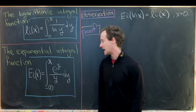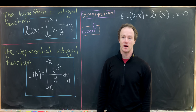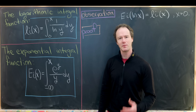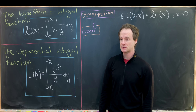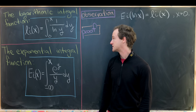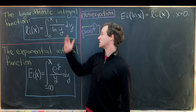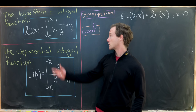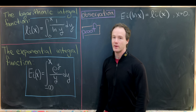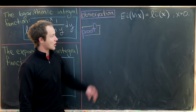Next we have the exponential integral function, denoted Ei(x), defined as the integral from minus infinity to x of e^y over y dy. So why do we need to define these functions? The integrands here do not have elementary antiderivatives — there's no simplification possible. We cannot write down an elementary antiderivative of 1 over the natural log of y, and similarly for e^y over y.